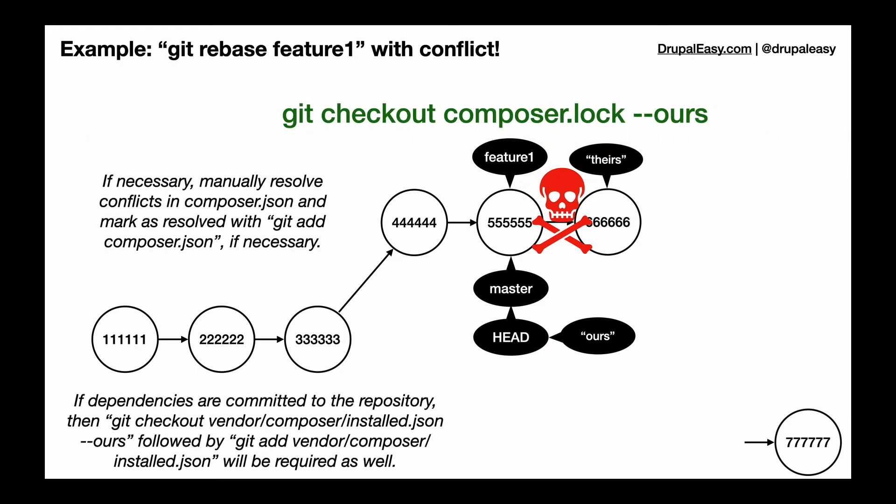Well, the first thing we're going to do is go through our composer-related files and take care of our conflicts. Sometimes you might end up with a conflict in the composer.json file. If so, that's normally very easy to resolve. Go edit that file, resolve it, and then mark it as resolved with git add composer.json.